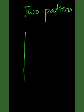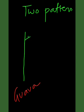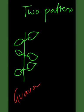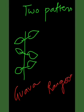Opposite arrangement can occur in two patterns. In the case of the guava plant, one pair of leaves is present at each node arranged at roughly right angles to the next pair. In the case of rangoon creeper, the pair of leaves is also arranged at roughly right angles to the next pair.